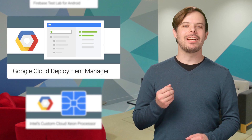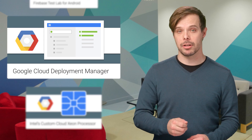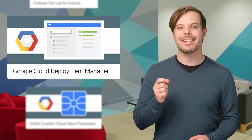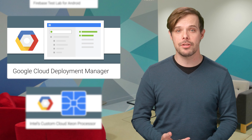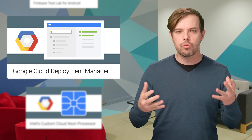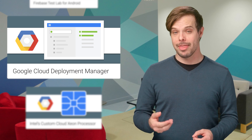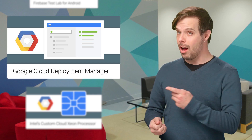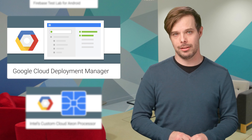By creating a set of declarative templates, Google Cloud Deployment Manager lets you consistently deploy, update, and delete resources like Google Compute Engine, Google Container Engine, Google BigQuery, Google Cloud Storage, and Google Cloud SQL. It's a great way to manage and automate your cloud environment, and there's an awesome post with lots of links and code that will help you get started.